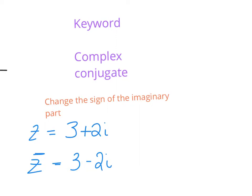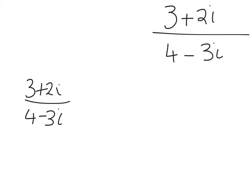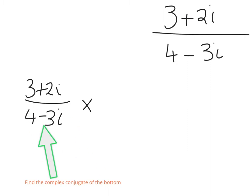Moving back to the question: three plus two i all divided by four minus three i. What we do is rewrite the question, and then multiply above and below by the complex conjugate of the bottom. The bottom is four minus three i, so the complex conjugate of that, changing the sign of the imaginary part, is four plus three i.